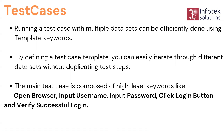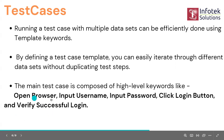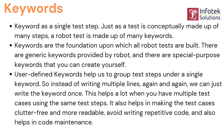Keywords like open browser help us open a browser. If you want to input a username, you write 'input text'. These keywords make it clear what action is being performed. Other keywords include input text for entering text, click element for clicking on a particular element, and close browser to close the browser. I'll discuss test cases in more detail in upcoming lectures.